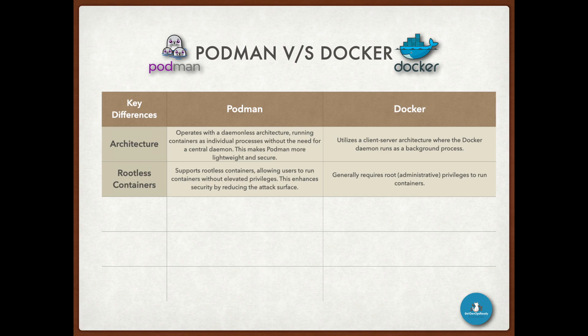2. Rootless Containers. Podman supports rootless containers, allowing users to run containers without elevated privileges. This enhances security by reducing the attack surface. Docker generally requires root administrative privileges to run containers.